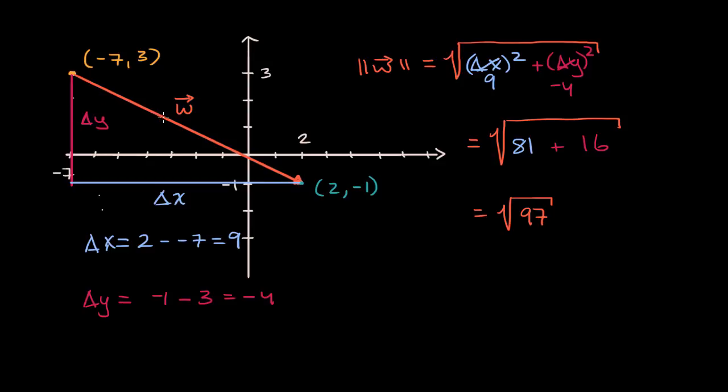And in this case, we were able to do that from its initial points and its ending point. Now another way that a vector might be specified, they might just be given an x component and a y component.